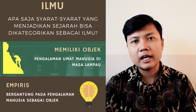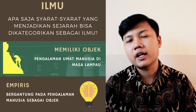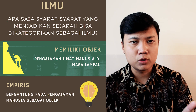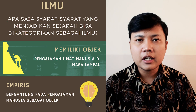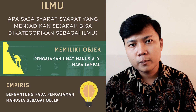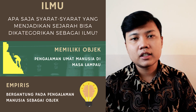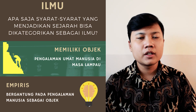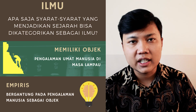Tentu objek studi dari ilmu sejarah adalah perbuatan umat manusia di masa lampau. Di sini ada dua hal yang perlu kita garis bawahi: yang pertama manusia, yang kedua adalah masa lampau. Keduanya tidak bisa dipisahkan satu sama lain. Misalkan sejarah terbentuknya alam semesta, sejarah terbentuknya bumi, sejarah keanekaragaman hayati — itu bukan objek studi ilmu sejarah, sekalipun pendekatannya historis. Itu bagian dari kajian ilmu biologi, geografi, geologi, dan sebagainya. Ilmu sejarah mengkaji masa lalu yang berkaitan dengan perbuatan umat manusia.